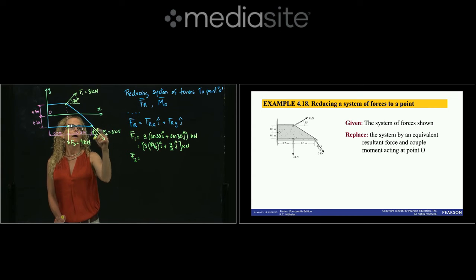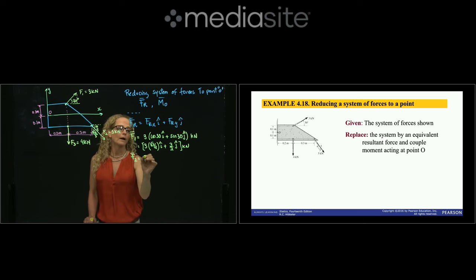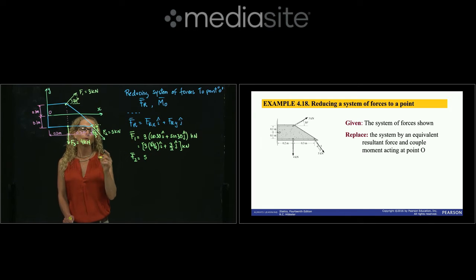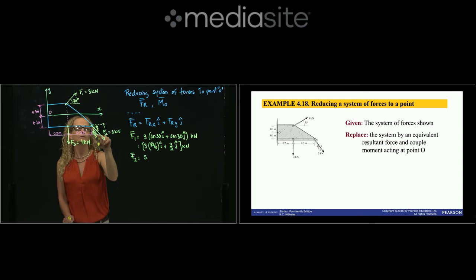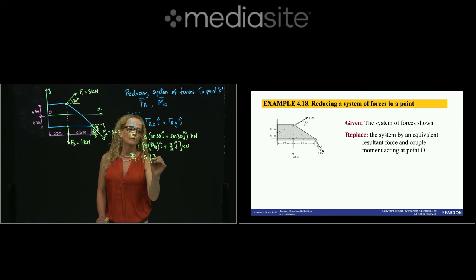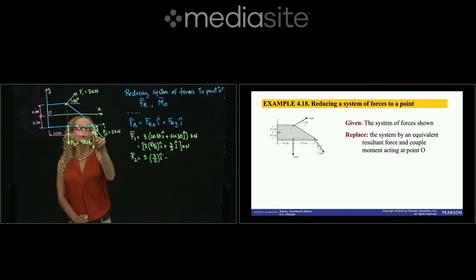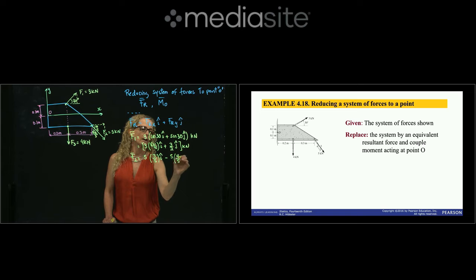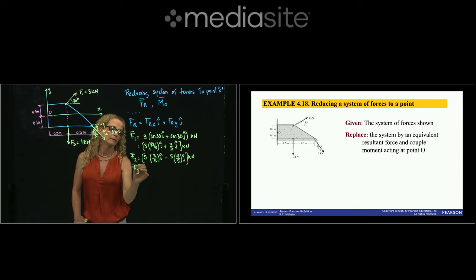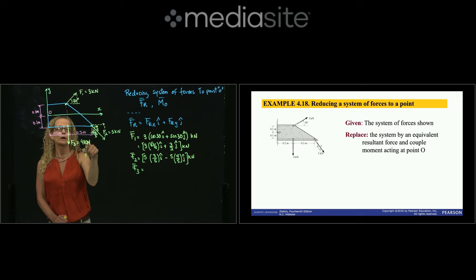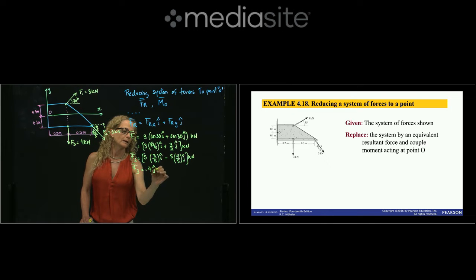F2 is decomposed using the angle theta shown in the diagram. The cosine of that angle is the adjacent over the hypotenuse, which is 3/5, and the sine is 4/5. So F2 = 5·(3/5)·I − 5·(4/5)·J kilonewtons. F3 is straightforward — it has only a component in the Y direction: F3 = −4J kilonewtons.